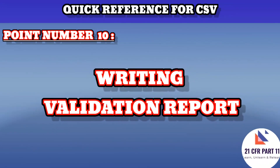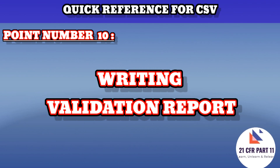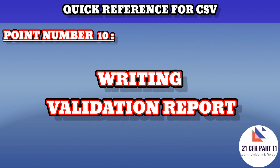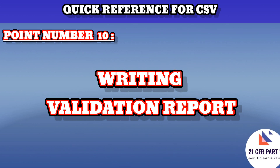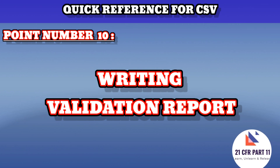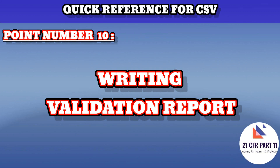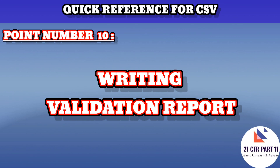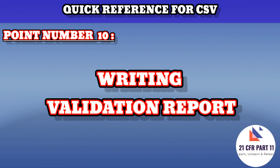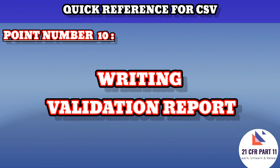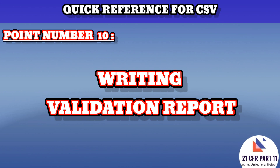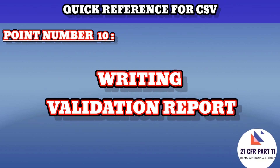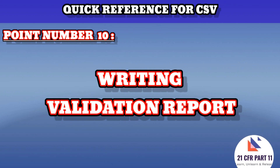Point number ten covers writing the validation report. This should include a brief description of each major project activity, reviewing all preceding validation activities and indicating the status of the system prior to implementation into a production environment. Deviations from the project plan should be documented and risk assessment should be performed. The approver of the validation report is a prerequisite for release, and all risk assessments for deviations must be completed while writing the validation report.